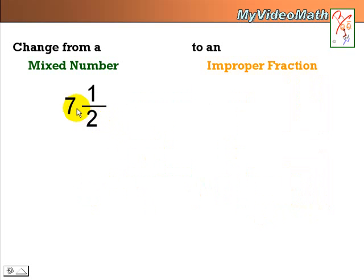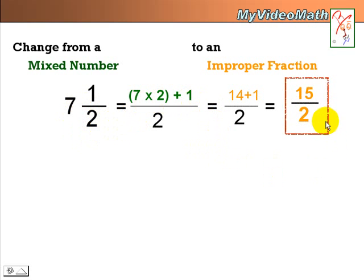Let's take a look at this mixed number, 7 and 1 half. You can always pause the video, work on your own, and then check with the answer. We're going to convert 7 and 1 half: 7 times 2 plus 1. And the answer is 15 over 2.